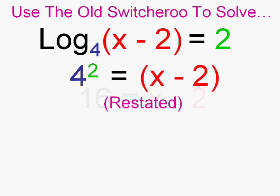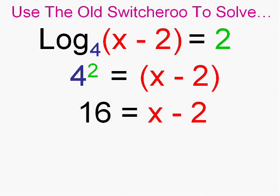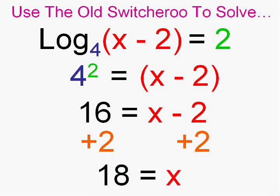Four to the second is sixteen, and now we can solve the equation. Adding two to both sides, x in this case is eighteen.